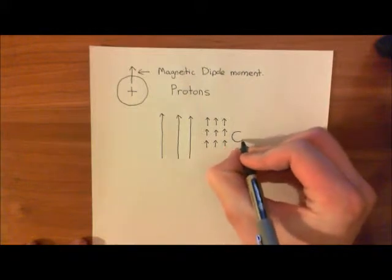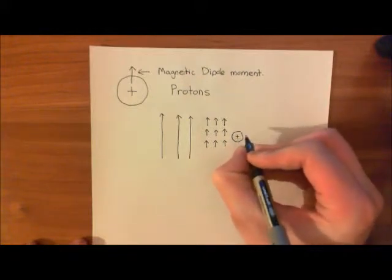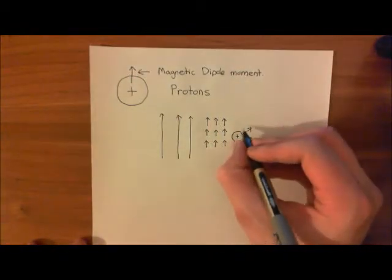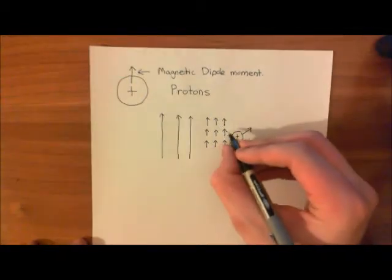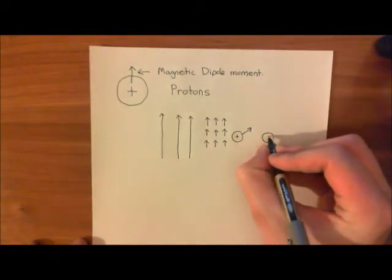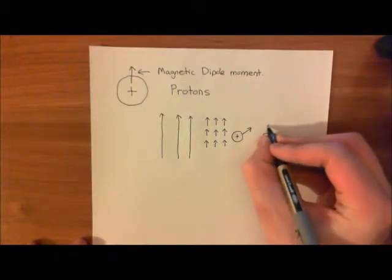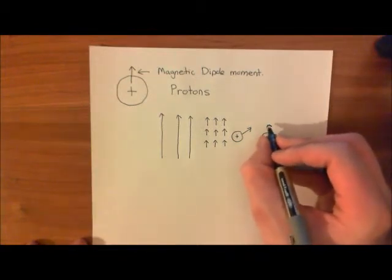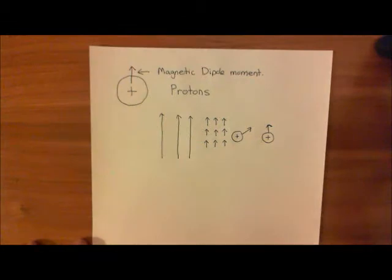So basically, when you put this proton into this magnetic field, its magnetic dipole moment initially could have been in whatever direction you like. But once you put it into this external magnetic field, what it will do is it will try to align itself with the magnetic field. So it will change its magnetic dipole moment so that its magnetic dipole moment becomes aligned with that magnetic field.